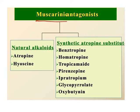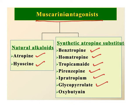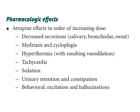Muscarinic antagonists are anti-muscarinics. Natural alkaloids include atropine and hyoscine. Synthetic atropine substitutes include benzotropine, homatropine, tropicamide, pirenzepine, ipratropium, glycopyrrolate, and oxybutynin. All these drugs have specific clinical uses. Before getting into them, let us explore the prototype drug atropine.